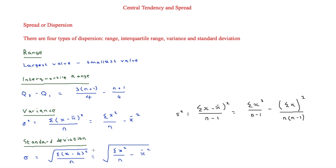For standard deviation, it is simply the square root of the variance. So we have the square root of [sum of (x − mean)² / n], which equally equals the square root of [sum of x² / n − mean²]. Likewise, for the sample standard deviation, you take the square root of either of the corresponding sample variance forms.